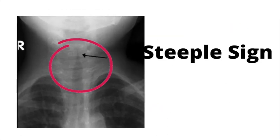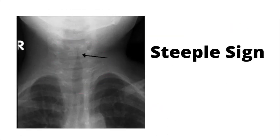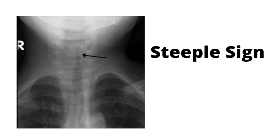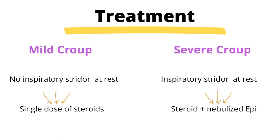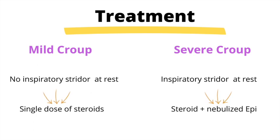Another high-yield fact is this classic X-ray finding, which is the steeple sign. Take good note of it because you might just see it on exam day. The treatment of croup depends on whether the symptoms are mild or severe. If it's mild — meaning they have no inspiratory stridor at rest — we give the patient a single dose of steroids.